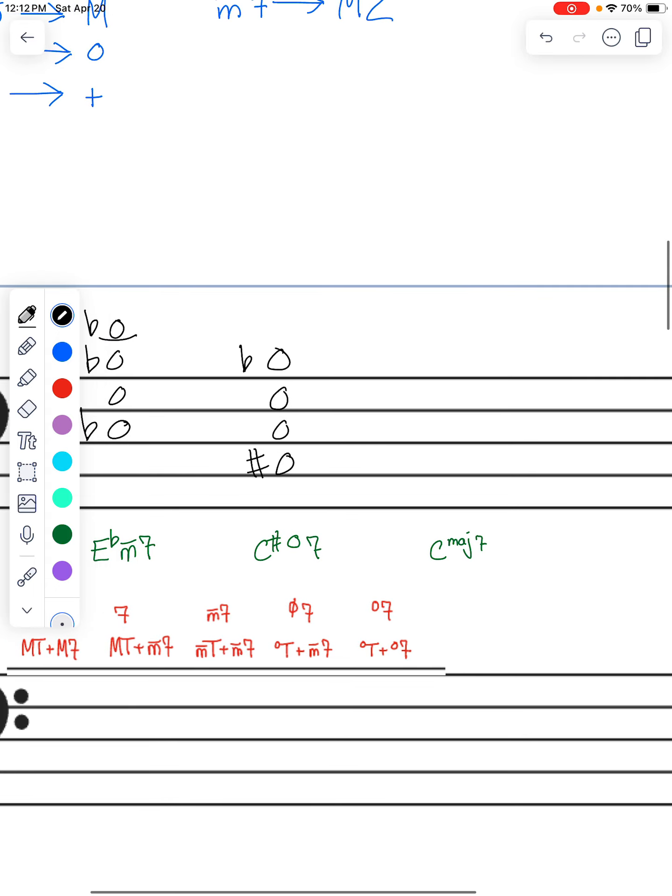Now let's make a C-major 7. C-major has no sharps, no flats. If we just write C-E-G-B, we've got it. That's it. We don't have to do anything to it. We've got a major triad and a major 7. So we're good to go there.